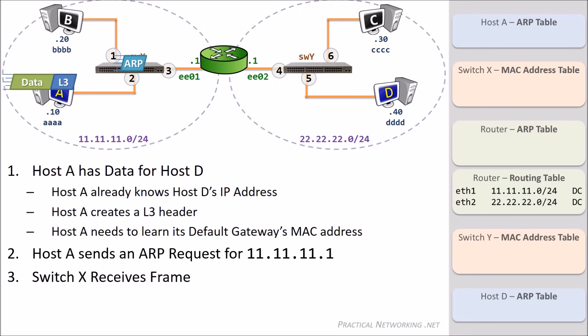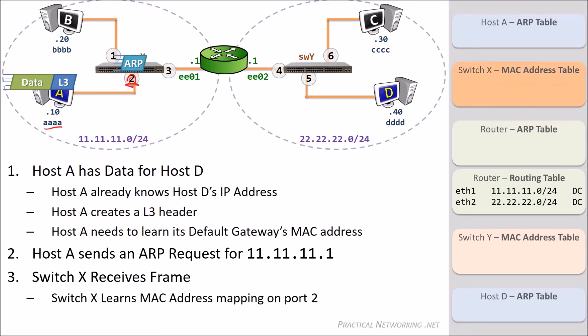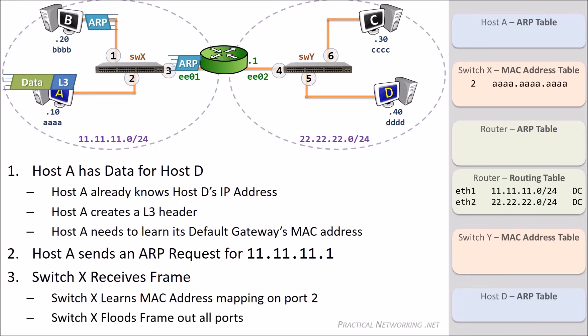The ARP request will arrive at SwitchX on port 2. The first thing the switch will do is learn the MAC address mapping from the received frame — the mapping will state that the device on port 2 owns the MAC address AAAA. The ARP request is a broadcast frame, which means it is meant to be delivered to everyone on the local network. Therefore, the switch will duplicate the frame and send it out each switch port except the one it came in on. This action is known as flooding. The switch will flood the frame and both the router and Host B will get a copy of the ARP request.